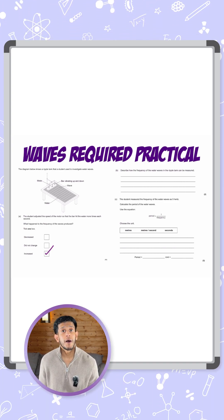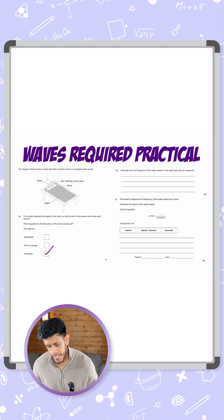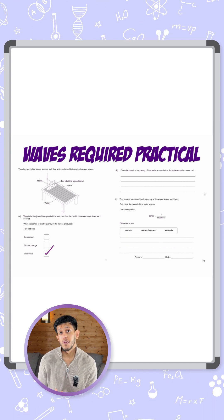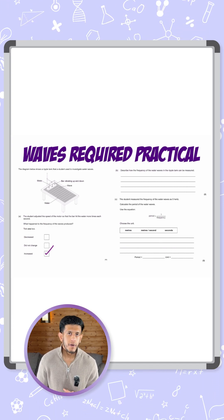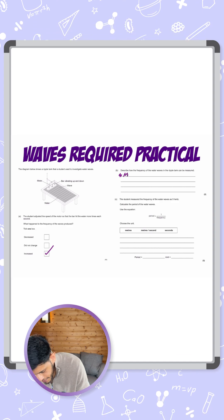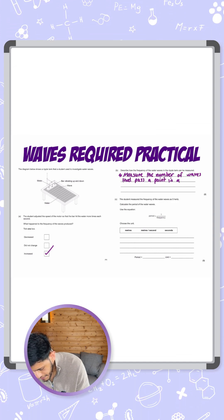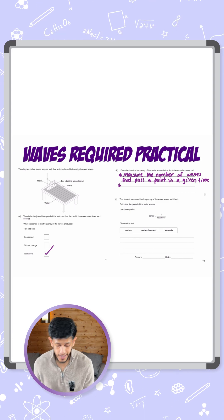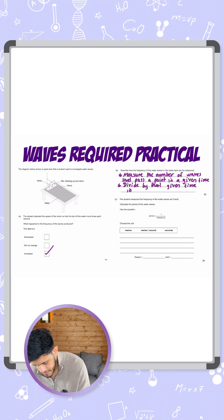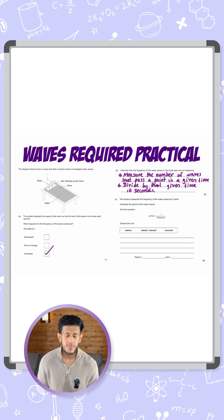The second question says: describe how the frequency of the water waves in the ripple tank can be measured. For two marks: firstly, measure the number of waves that pass a point in a given time, and secondly, divide by that given time in seconds. The number of waves over a certain time gives you the frequency.